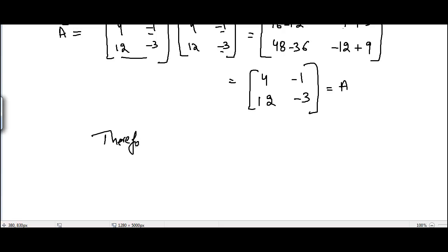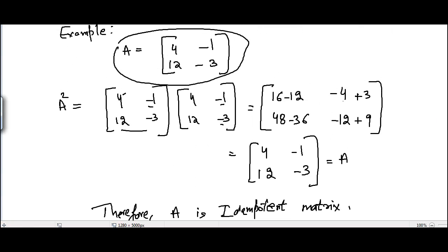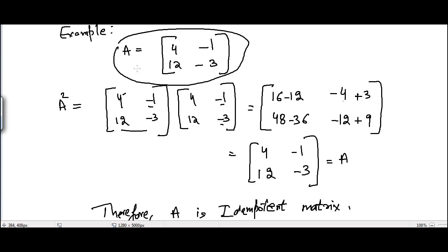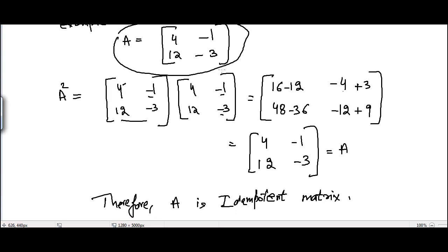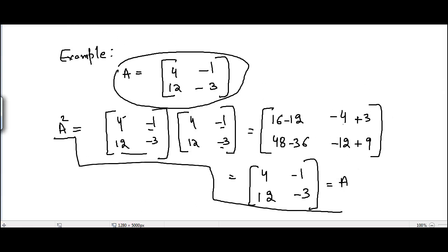Therefore, according to example considered, A is idempotent matrix. So in the similar way, we can take infinite examples of matrix A and can prove that it is idempotent matrix. And if this condition holds true, then A is said to be idempotent. We'll see you guys in the next video. Thank you.